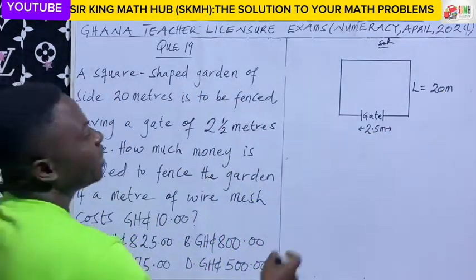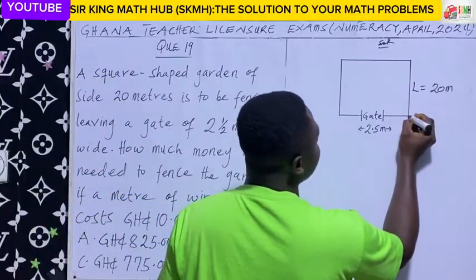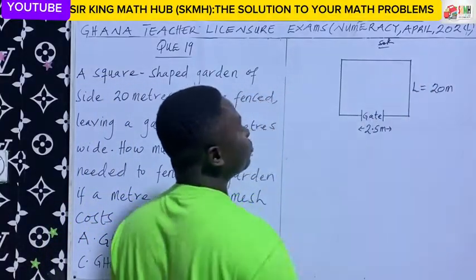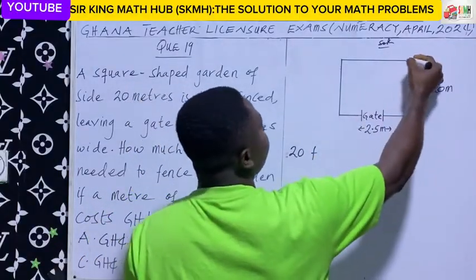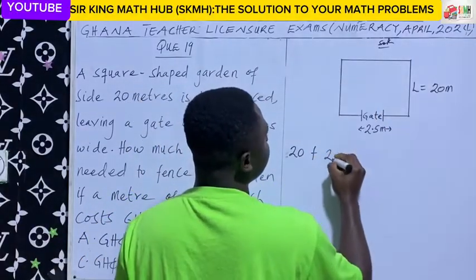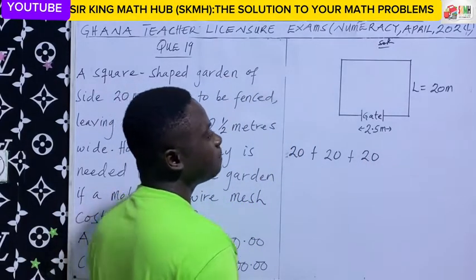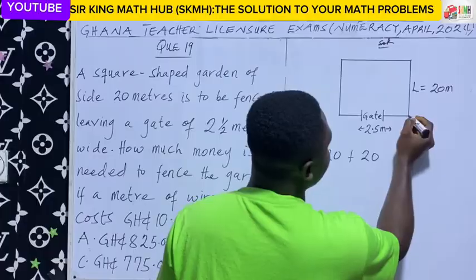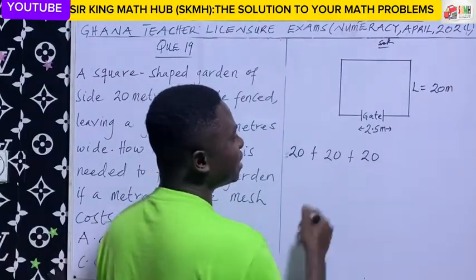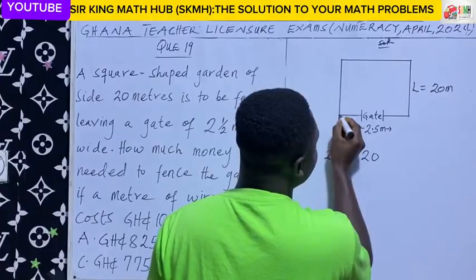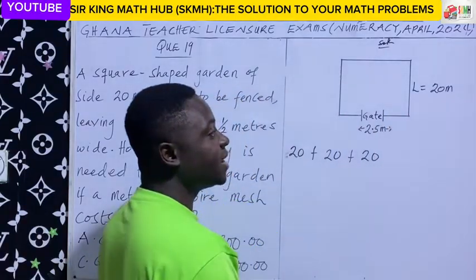Our goal here is to fence around this square-shaped garden. Starting from each side, we need 20 meters of wire mesh per side for three full sides. For the fourth side, we know the full length measures 20 meters, but we have to fence from one point to the gate and from the gate to the other end, excluding the gate width.